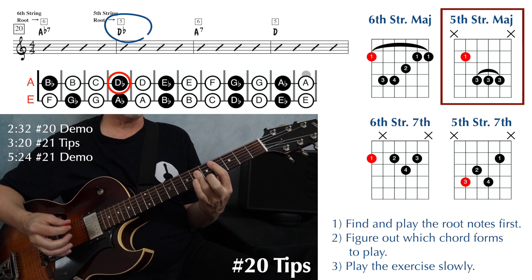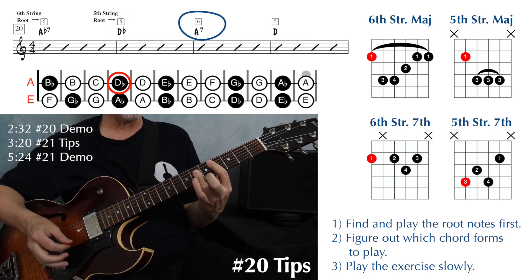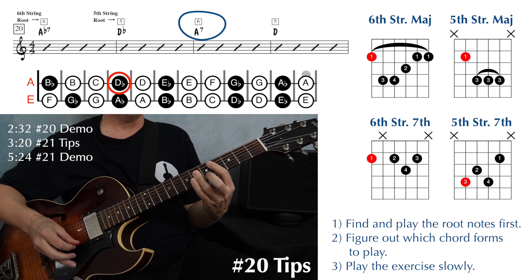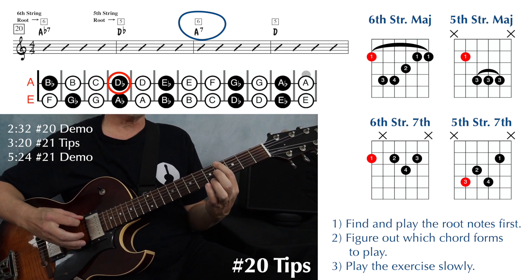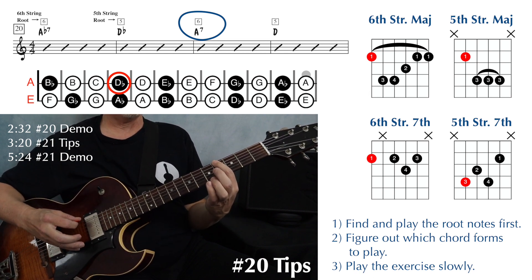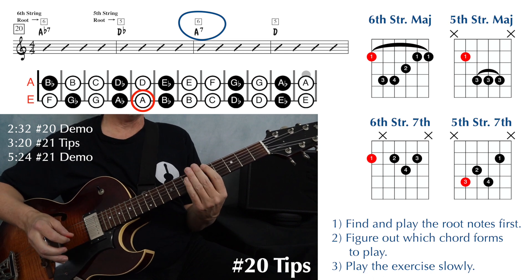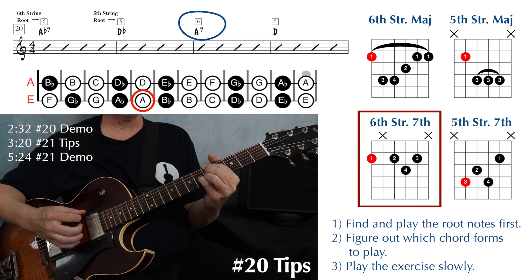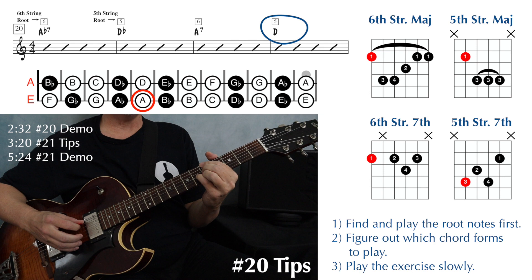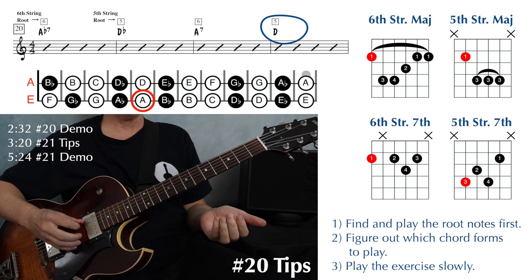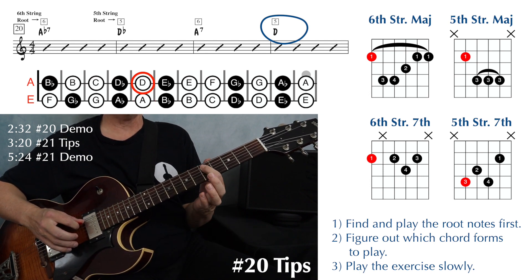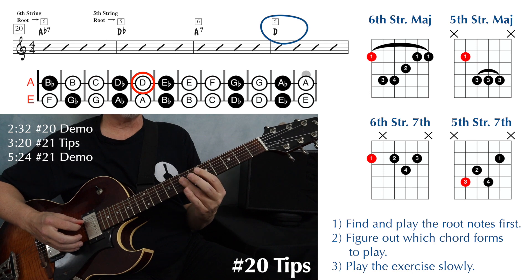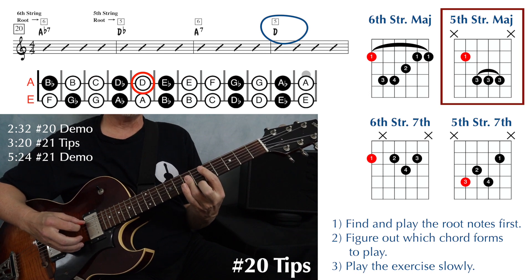And then we're going to be working our way up the fretboard. Next, we have an A7 on string six. Your Ab was at the fourth fret on string six, so your A natural will be at the fifth fret on that string. And again, that's the sixth string root, so we use our sixth string dominant seven shape. And then we need to find a D major on string five — also at the fifth fret, with that fifth string major shape.